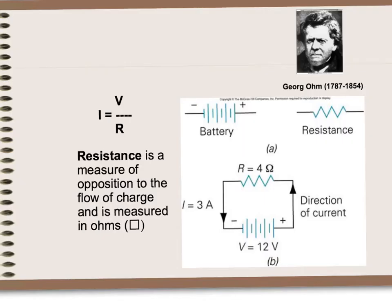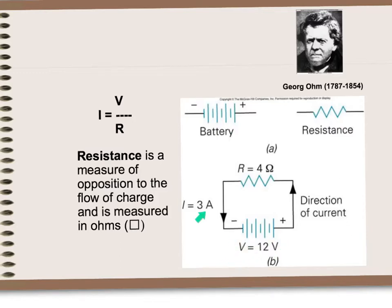Ohm's law is named after George Ohm, who developed the law. Here we have Ohm's law again: current equals voltage divided by resistance. Remember that resistance is a measure of the opposition to the flow of charge, and resistance is measured in ohms. Looking at our diagrams, the battery symbol and the resistance symbol are shown. Here we have a resistance of 4 ohms, a battery of 12 volts, and our current. According to this equation, current equals voltage divided by resistance: 12 divided by 4 equals 3.